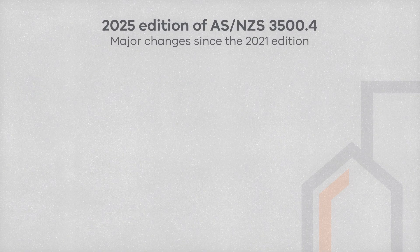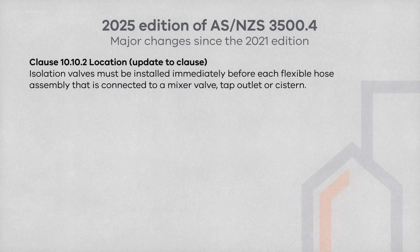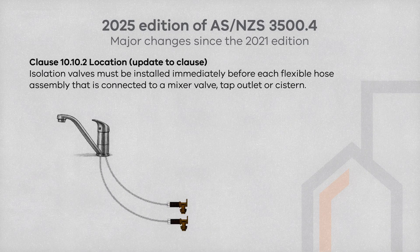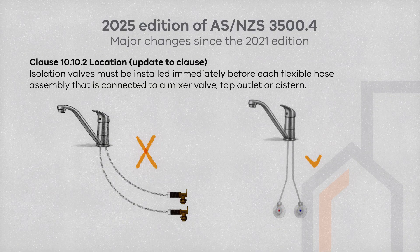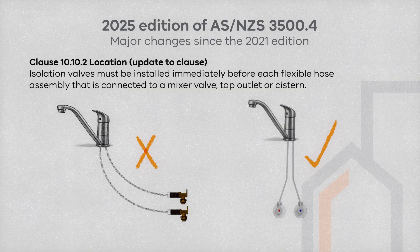Similar to Part 1, Clause 10.10.2 in Part 4 includes the addition to the location of isolating valves. It states that an isolation valve must be installed immediately before the flexible hose assembly connected to a mixer valve or tap outlet. This applies to circulatory pipe plumbing systems.